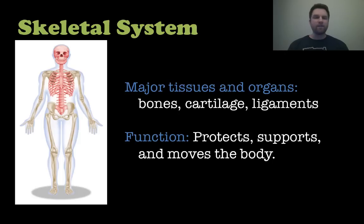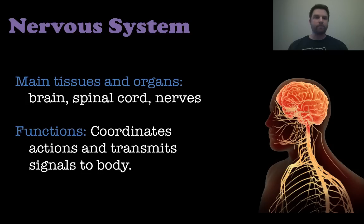The skeletal system consists of bones, cartilage, and ligaments — these are things that help protect, support, and move your body. Next is the nervous system, which is made up of your brain, spinal cord, and nerves. This does all the jobs of coordinating actions and transmitting signals to the body.